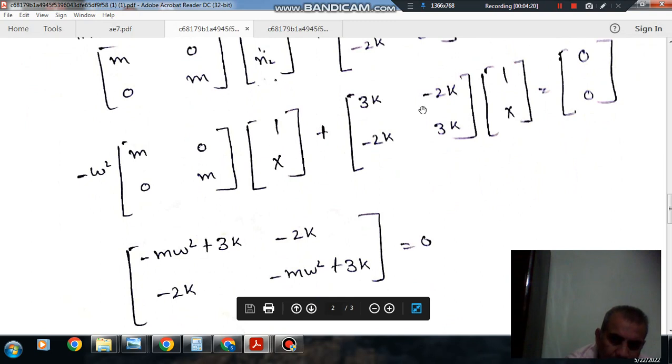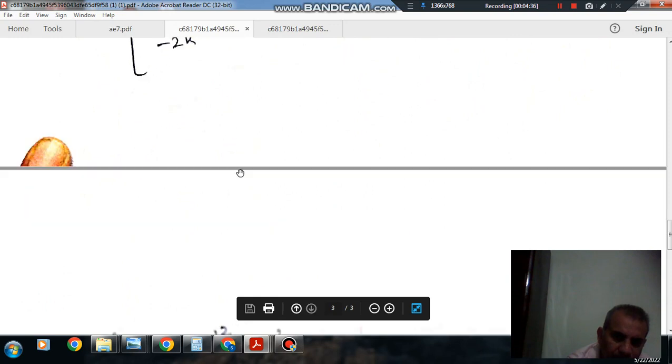The result will be [-mω² + 3k, -2k; -2k, -mω² + 3k]. Setting the determinant equal to zero and solving this matrix, we get (3k - mω²)² minus 4k² = 0.